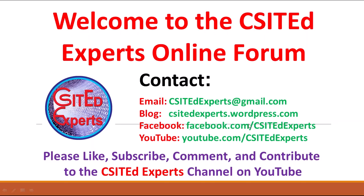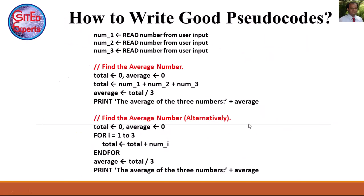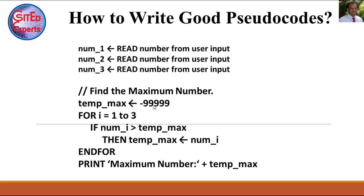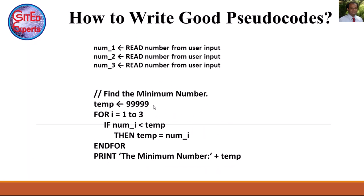Welcome to the CSITA Experts Online Forum. In this short video I will show you how to write good pseudocode. I will demonstrate it with a very small example — I will show you how to find the average of three numbers: num_1, num_2, num_3. I will also show you how to find the maximum and minimum of these three numbers.